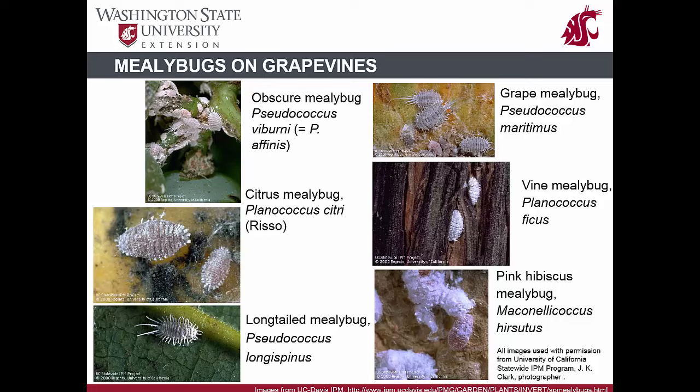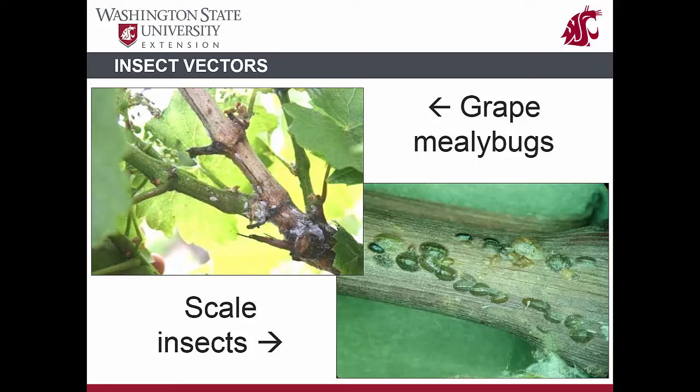These mealybug species are known to spread all grapevine leaf roll-associated viruses except leaf roll-associated virus 2 and 7. Among these seven different mealybug species, only the grape mealybug has so far been found in Washington State vineyards. In this respect, Washington State vineyards are fortunate when compared to California vineyards. A concerted effort is critical to avoid the introduction of mealybug species alien to Washington vineyards. Soft-scale insects, such as the European fruit lecanium scale, are present in Washington vineyards and are a competent vector of the virus.